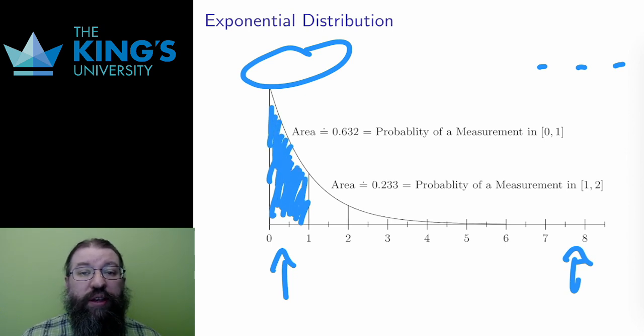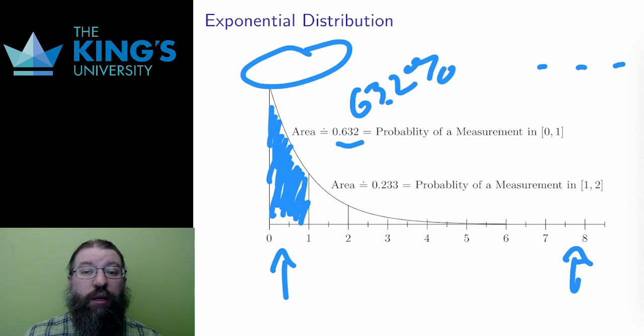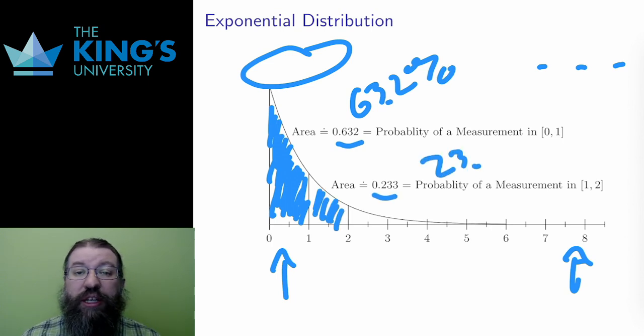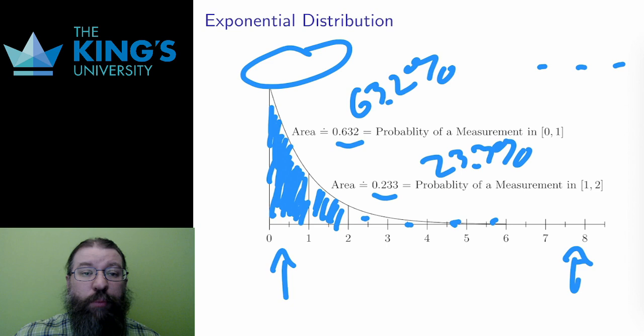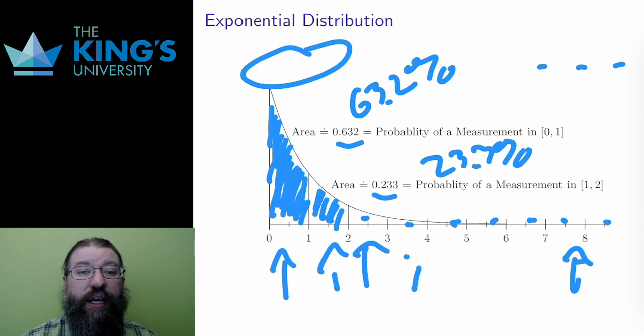The area under the graph between various pieces gives the probability of measurements in those pieces. The area between 0 and 1 is about 0.632, so the probability of a measurement between 0 and 1 is about 63.2%. The area between 1 and 2 is about 0.233, so the probability of a measurement between 1 and 2 is about 23.3%. The key is that these are all integrals. The area under the curve is the probability, so it is all measured by integration.